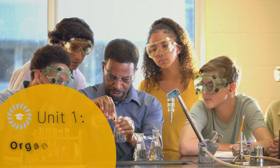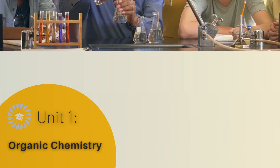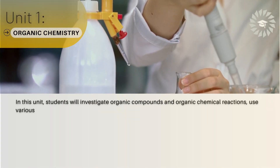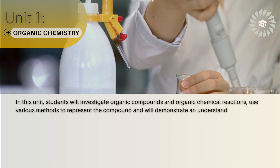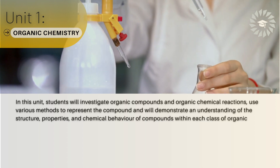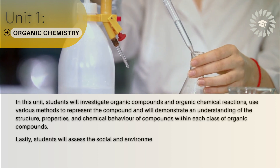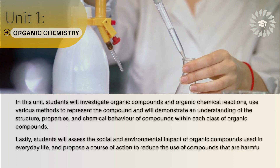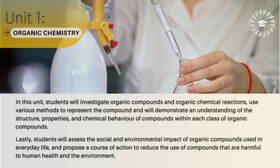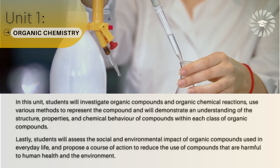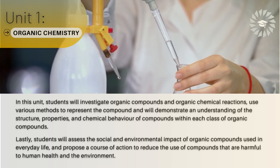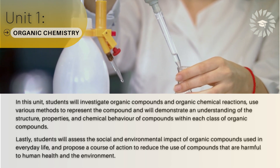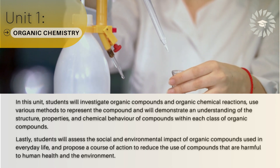Unit 1: Organic Chemistry. In this unit, students will investigate organic compounds and organic chemical reactions, use various methods to represent the compounds, and will demonstrate an understanding of the structure, properties, and chemical behavior of compounds within each class of organic compounds. Students will assess the social and environmental impact of organic compounds used in everyday life, and propose a course of action to reduce the use of compounds that are harmful to human health and the environment.